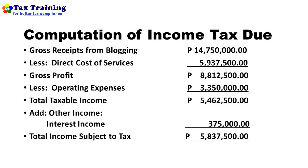Now we compute the income tax due under itemized deductions. Gross receipts from blogging: fourteen million seven hundred fifty thousand for the year. Less direct cost of services of five million nine hundred thirty-seven thousand five hundred, giving a gross profit of eight million eight hundred twelve thousand five hundred. Less operating expenses of three million three hundred fifty thousand, giving total taxable income of five million four hundred sixty-two thousand five hundred. Adding other taxable income — interest income of three hundred seventy-five thousand — total income subject to tax is five million eight hundred thirty-seven thousand five hundred.